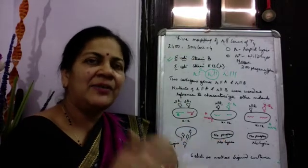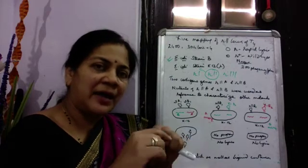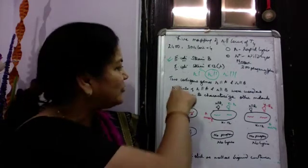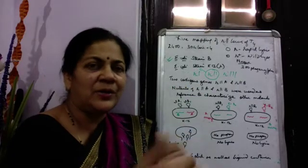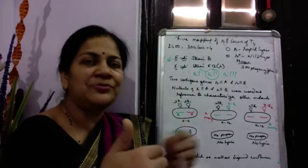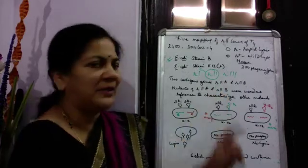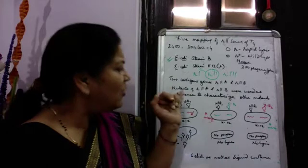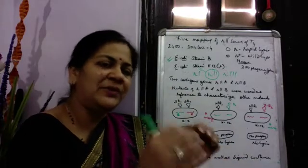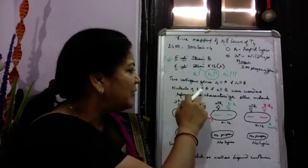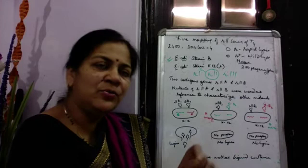Using complementation tests on the r2 mutants, Benzer found that the r2 locus actually contains two contiguous genes — two gene segments one after another, representing two different units of function. He named them r2a and r2b. All isolated mutants were then categorized as belonging to either r2a or r2b, using r2a and r2b mutants as reference points.